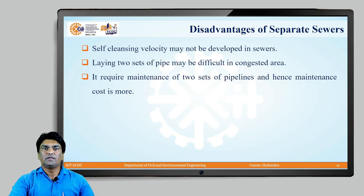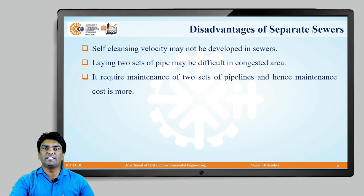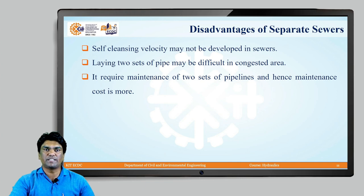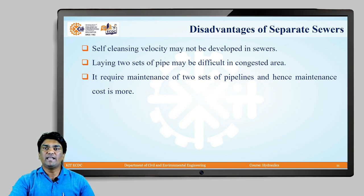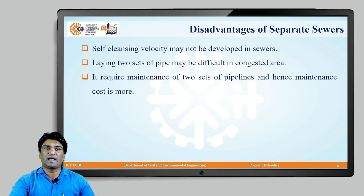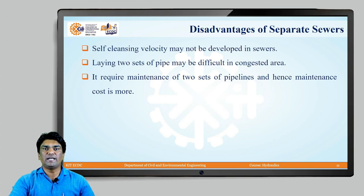The disadvantages of separate sewers: self-cleansing velocity may not be developed in the sewers — that is, the minimum velocity required to prevent deposition of silt or particulate matter may not be maintained in some sections, causing silting and reduction in cross-sectional area over time. Laying two sets of pipes may be difficult in congested areas. It also requires maintenance of two sets of pipelines, hence maintenance cost is more.